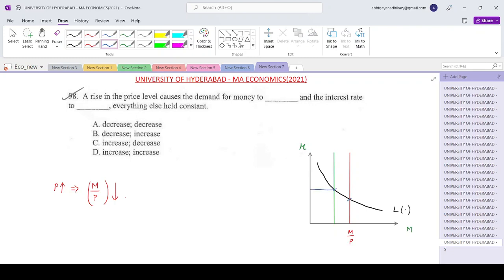So what is happening? Earlier the interest rate was, let's say, R1. Now it has increased to R2. Whereas the equilibrium money supplied and demanded has fallen. So the demand for money will fall and the interest rate will rise. So the decrease followed by an increase. So that is your option number B over here. And that's your answer to question number 98.